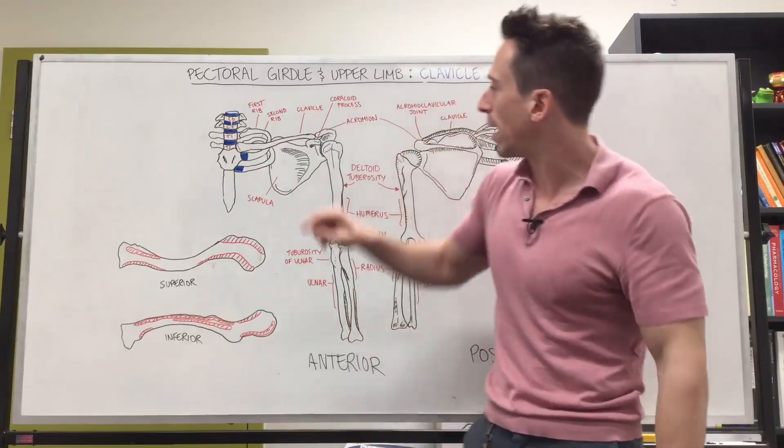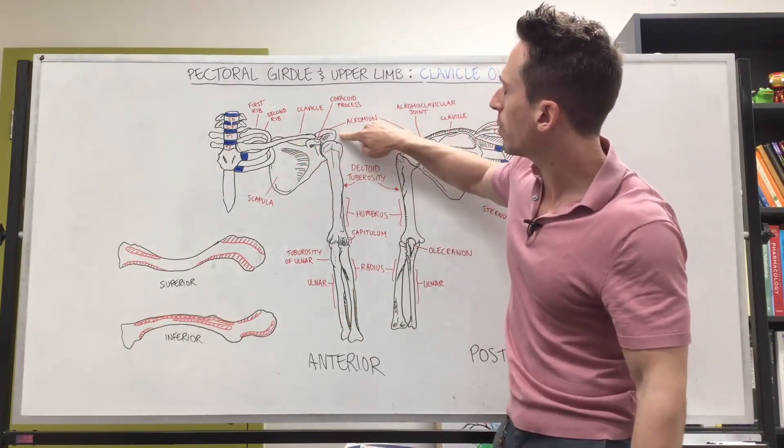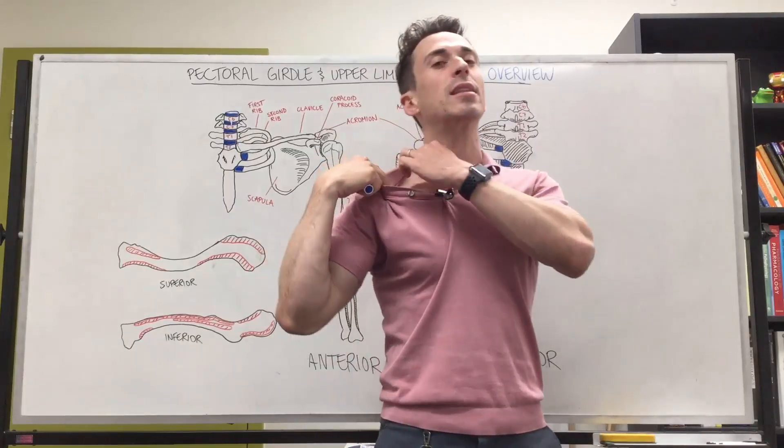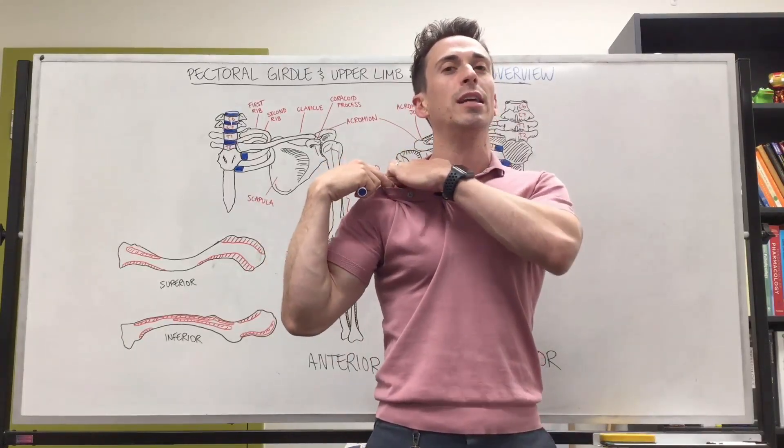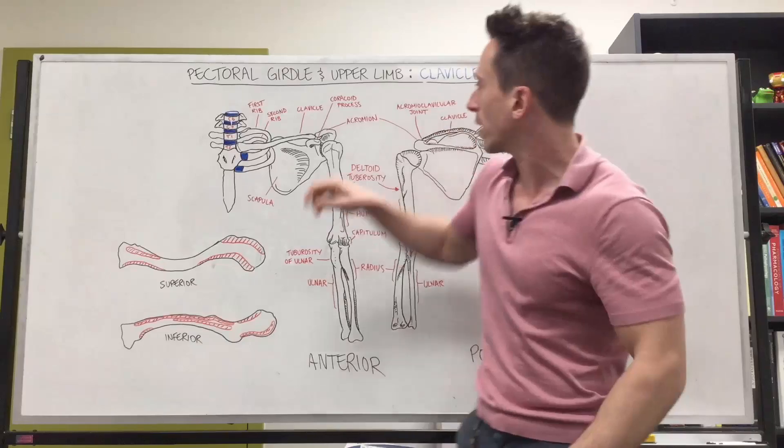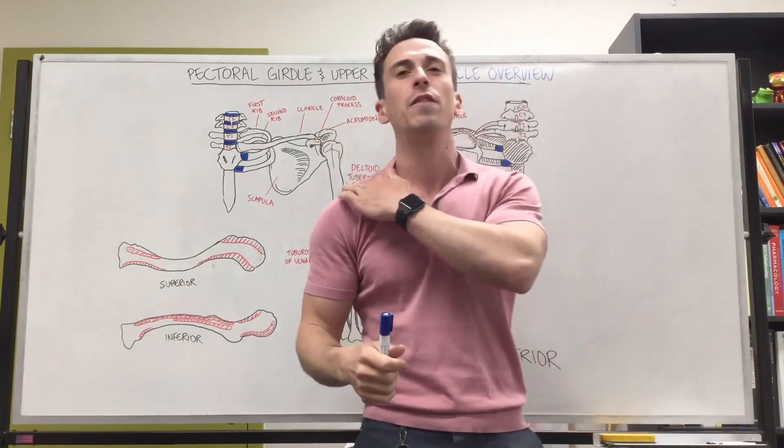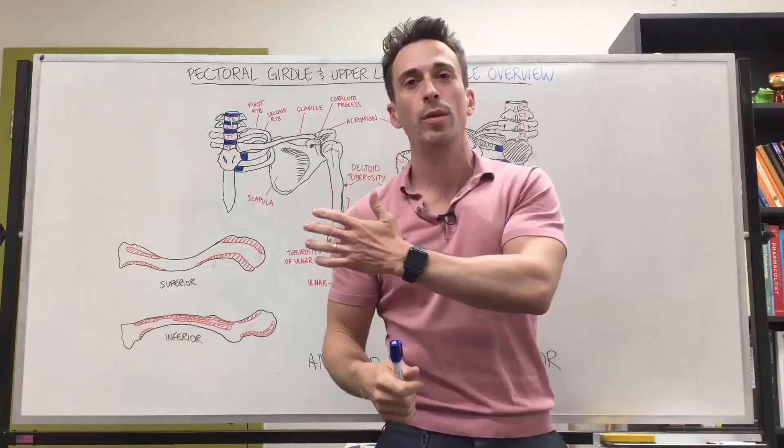And you can continue along the entire length of the clavicle up until you get to the acromion. Now you can't actually palpate where the clavicle finishes and the acromion begins, because as we get to that area, what you're going to find is that the deltoid is going to be covering that acromioclavicular joint. So you can't feel where the clavicle finishes and the acromion begins.